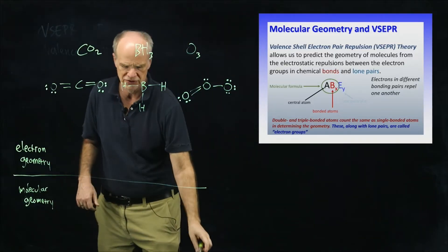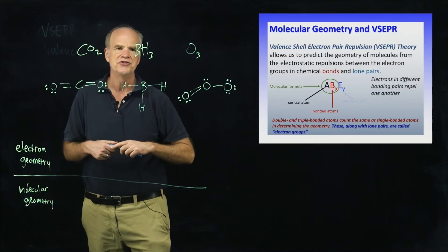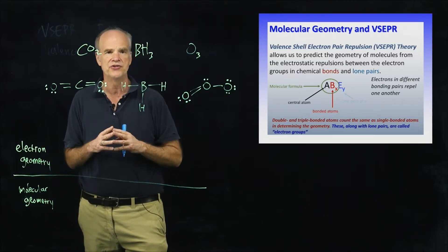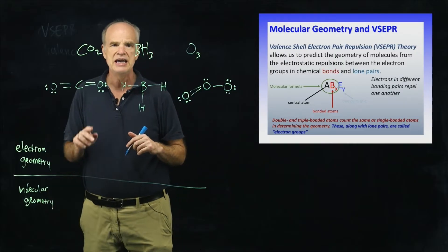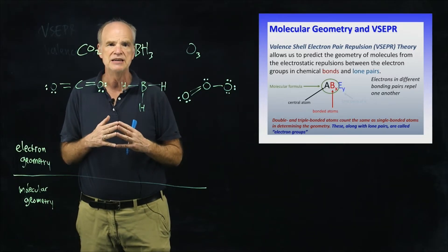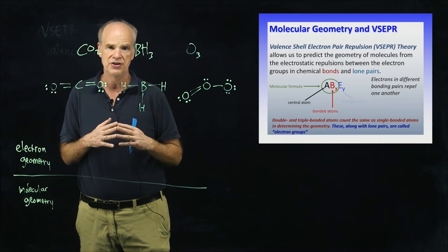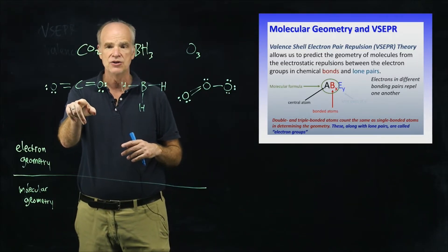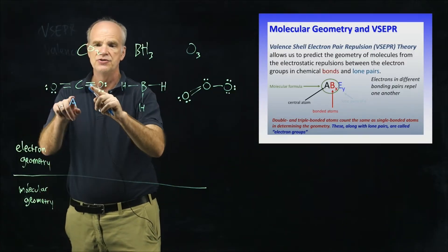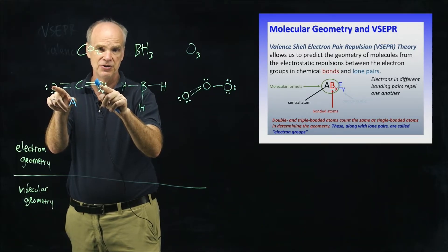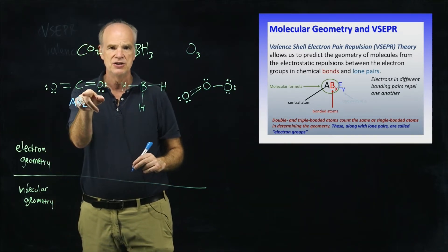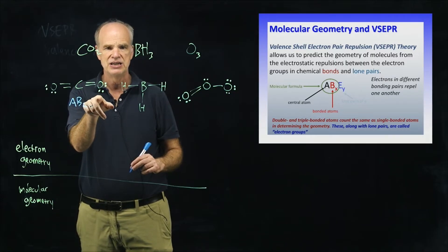Something that helps in thinking about these molecules is a generic code called the ABE code. A refers to the central atom, B refers to the side or peripheral atoms, and E refers to the lone pairs on the central atom. For carbon dioxide, there is one central atom A, two oxygens bound to it giving B2, and carbon has no lone pairs, so it's AB2.